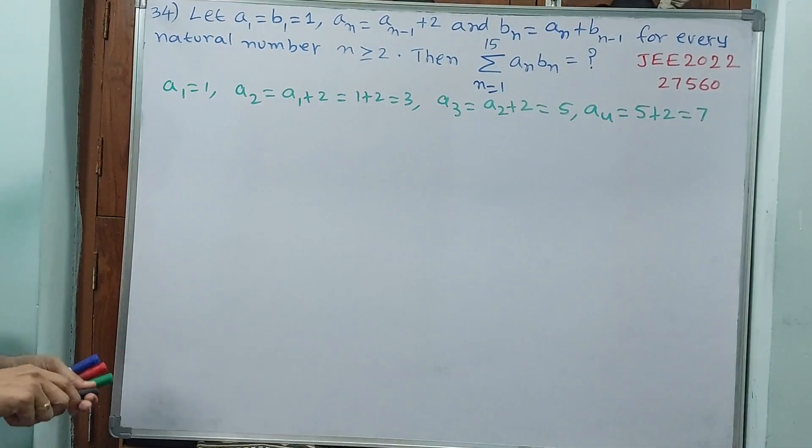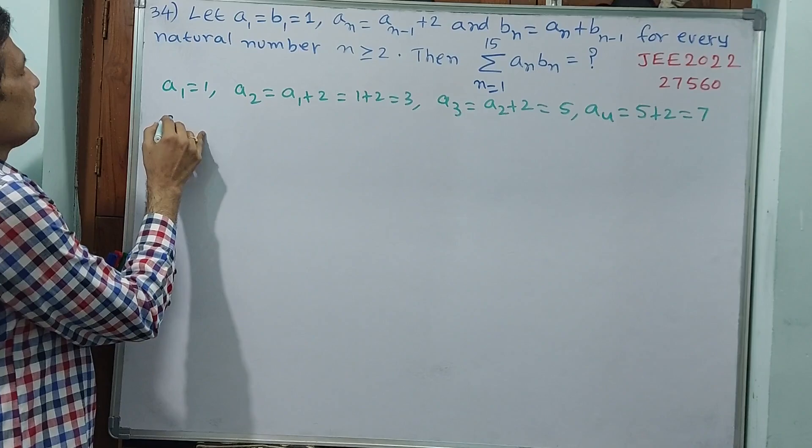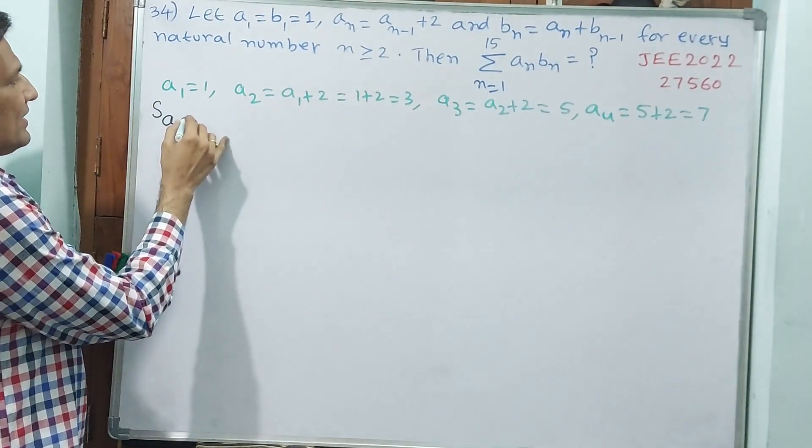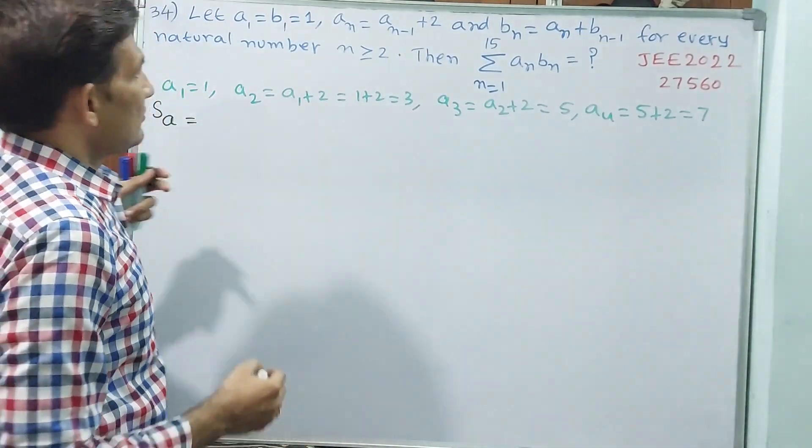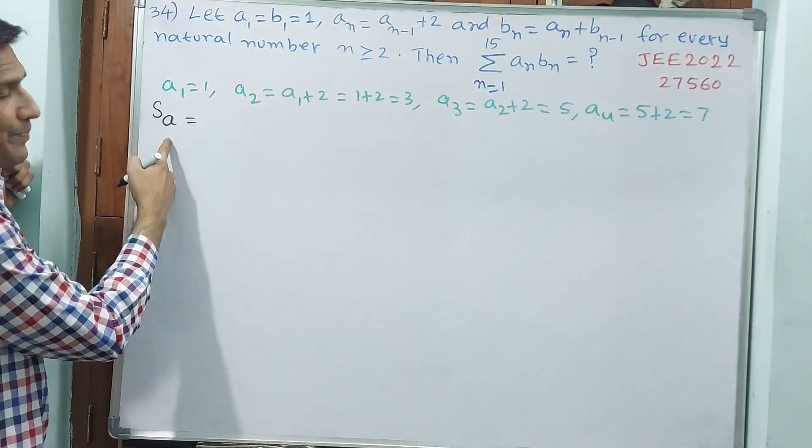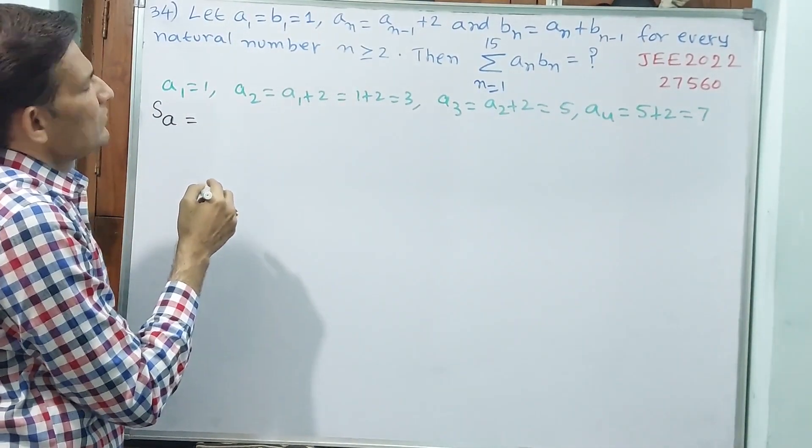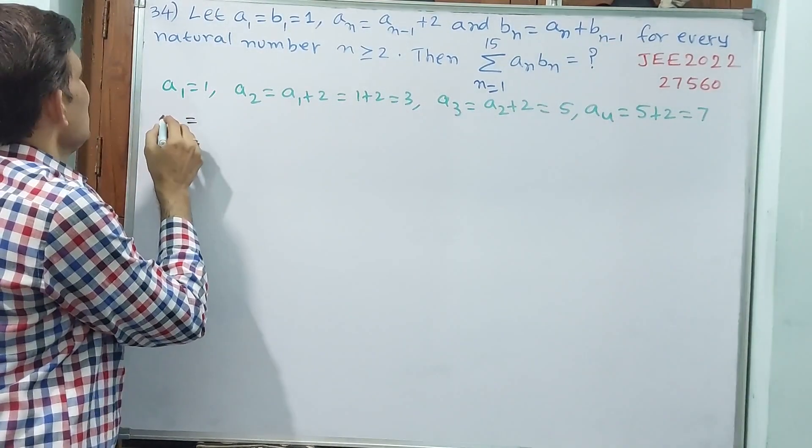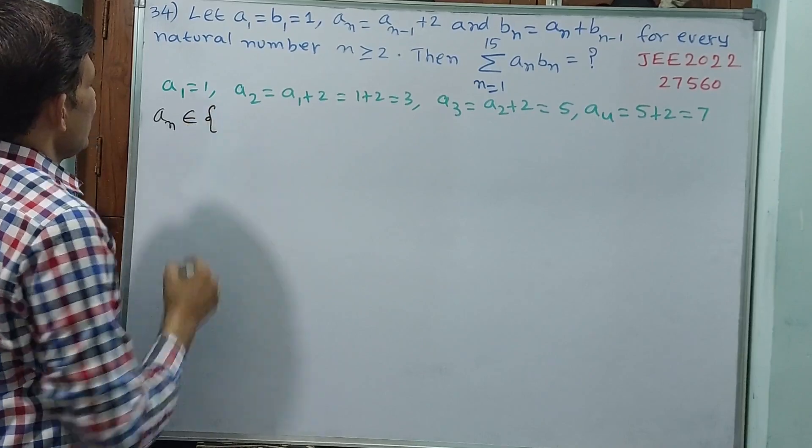With this we can conclude that we see, the sum of a is equal to - we will write not sum, series only we will write. What I will write, a_n belongs to, like that I am writing, like set I am writing.